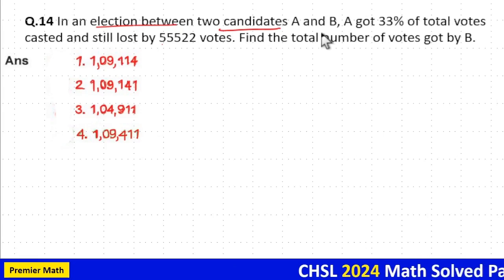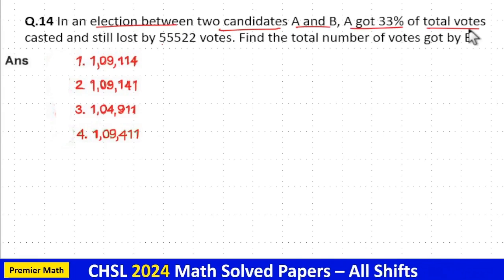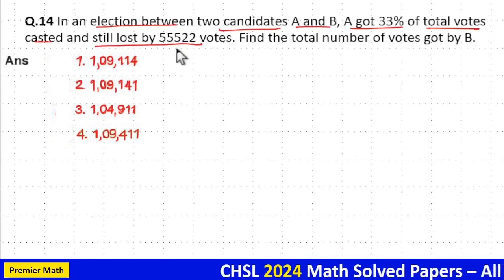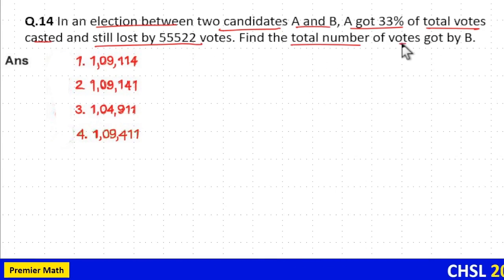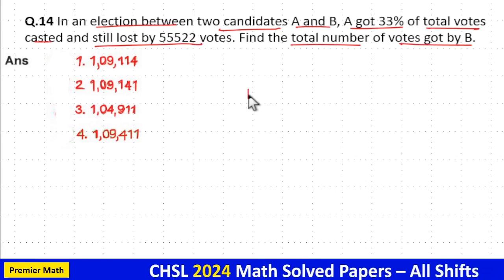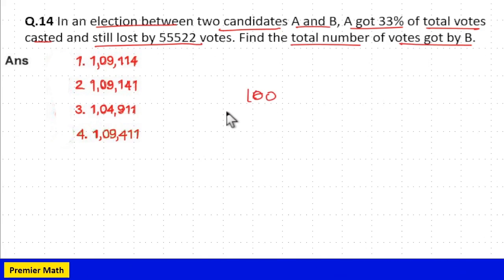In an election between two candidates A and B, A got 33% of the total votes casted and still lost by 55,522 votes. Find the total number of votes scored by B. Here, consider the total casted votes as 100.